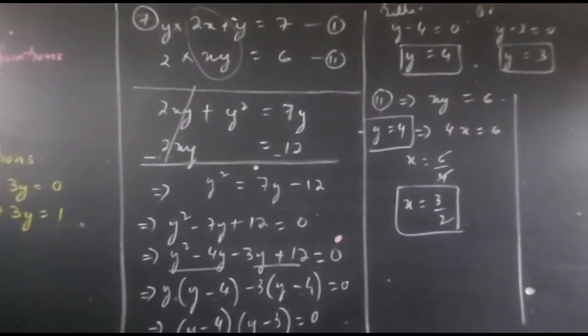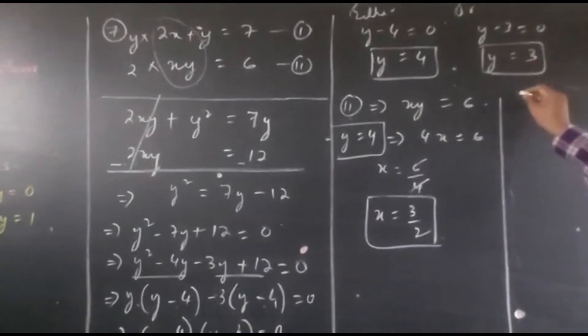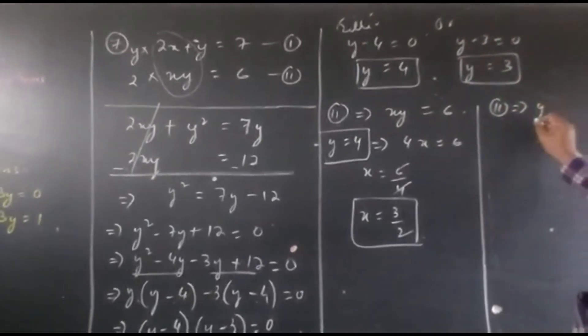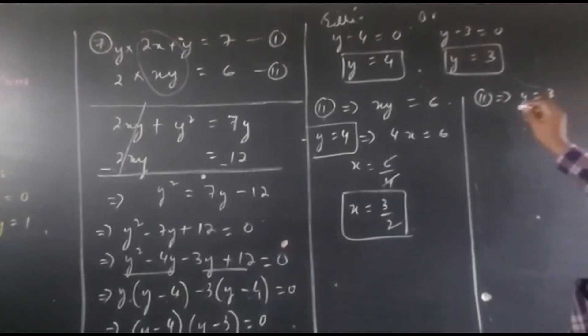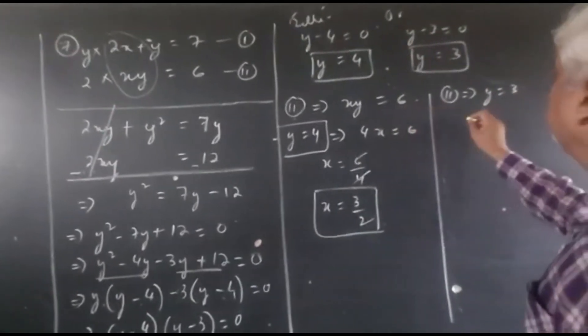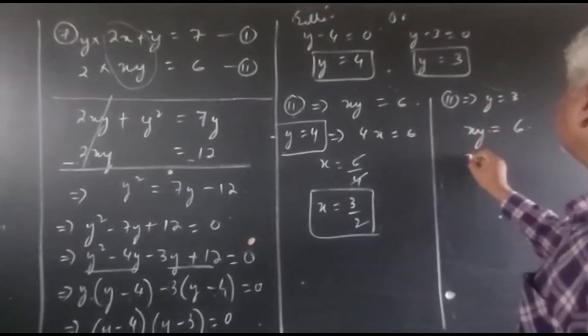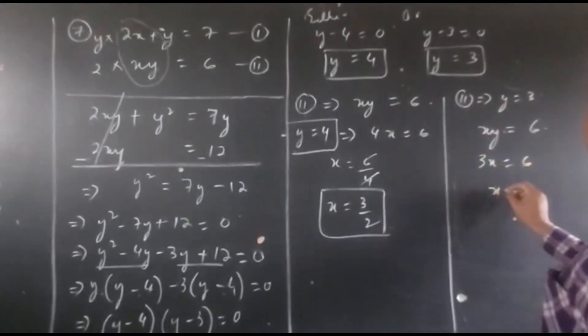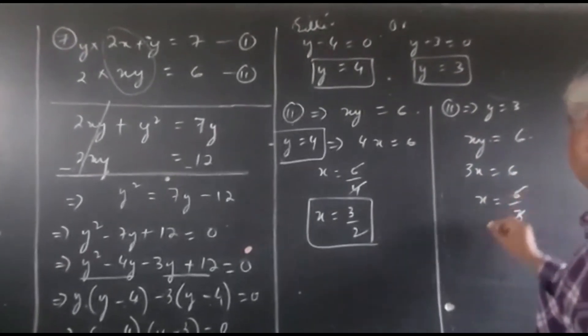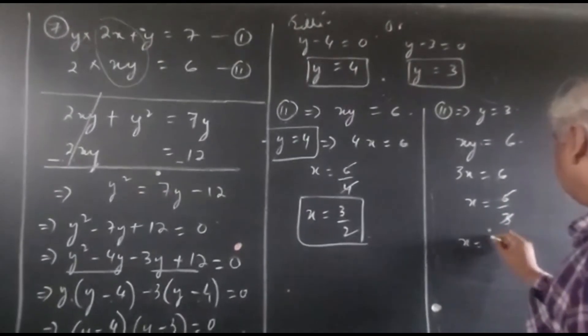So in the same way, when we take y equals 3 in the second equation, our equation will be xy equals 6. Y equals 3, so this will be 3x equals 6, x equals 6 upon 3, or x equals 2.